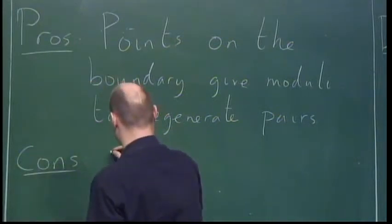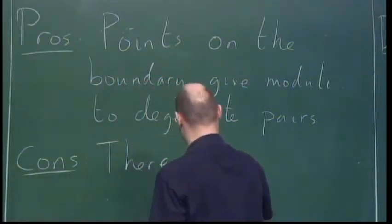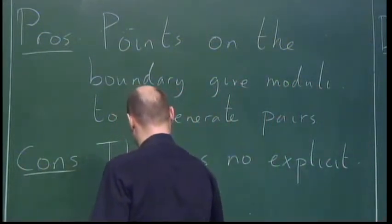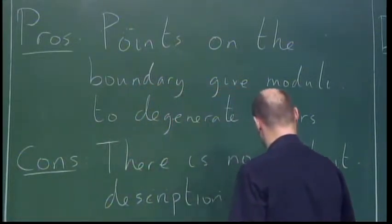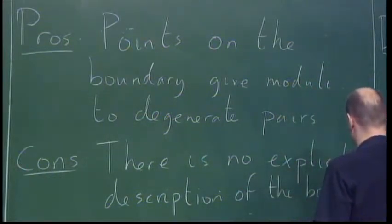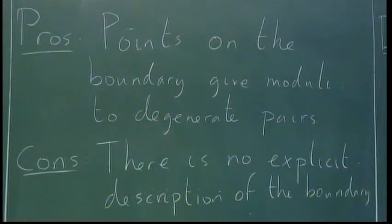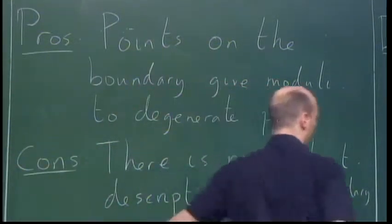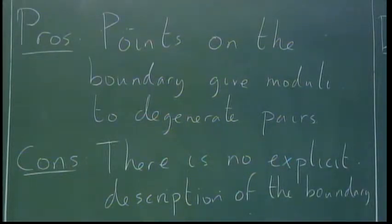But the big con is there is no explicit description of the boundary. This result is really just an existence result — it doesn't tell us what the boundary looks like, what the components are, what their dimensions are. All of that is completely opaque. So what we want to do is figure out a way of describing what this compactification looks like in an explicit fashion, by comparing it to a different type of compactification.